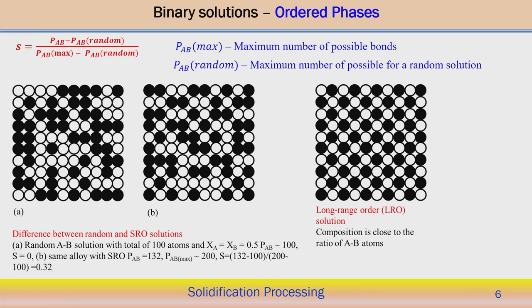We can take an example to understand the difference between a random and a short range order solution. For a random A–B solution with a total of 100 atoms — in the random solution, the probability is more or less the same for atoms A and B with no size difference, so X_A = X_B ≈ 0.5. P_AB (number of possible bonds between A and B) is 100 in the random solution. If we calculate S, it becomes 0. So in a random solution, the degree of ordering is basically 0.